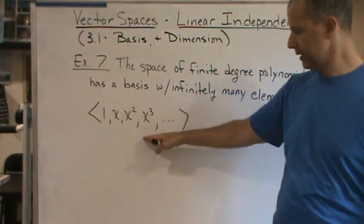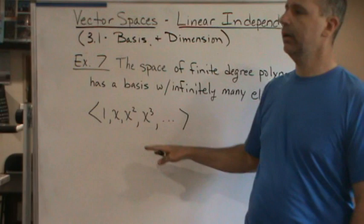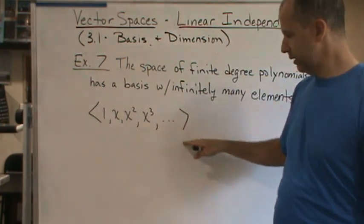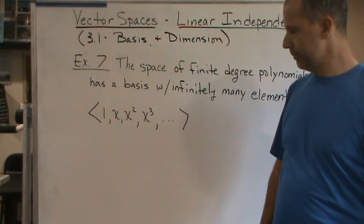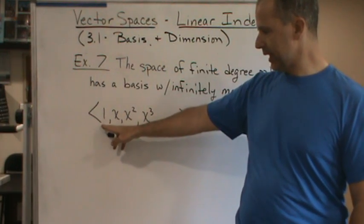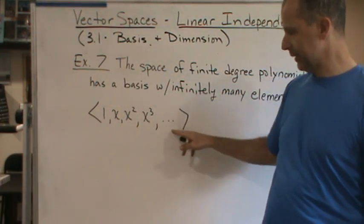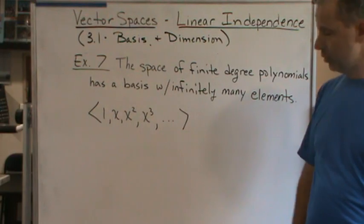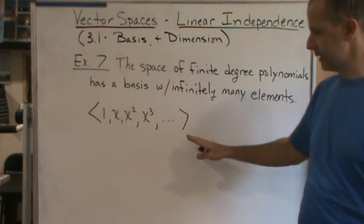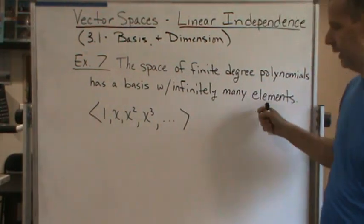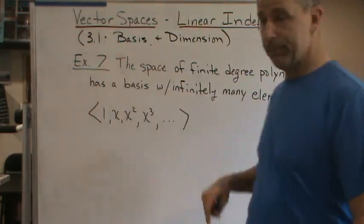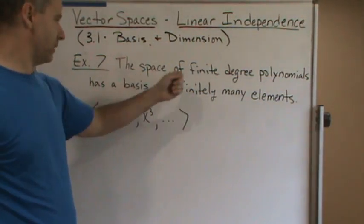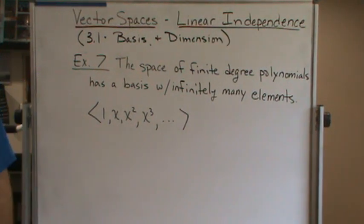...write the sequence of elements in this basis like so: we can say 1, x, x², and we can just keep increasing it to infinity. So there's an infinite number of elements in this basis, even though it's the space of finite degree polynomials.